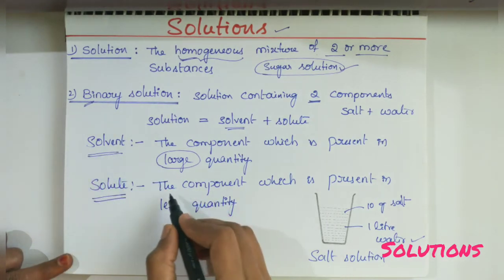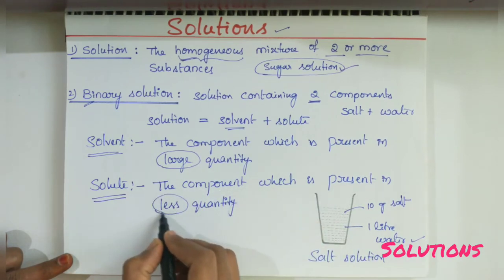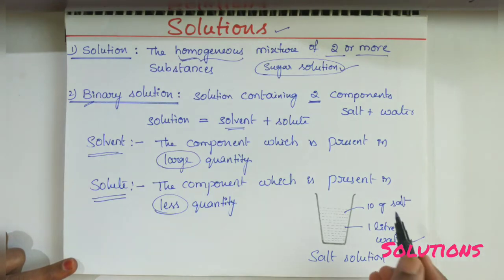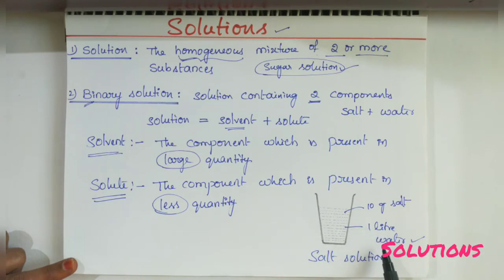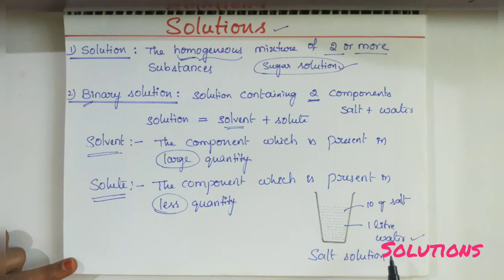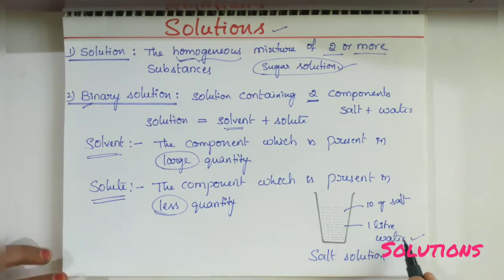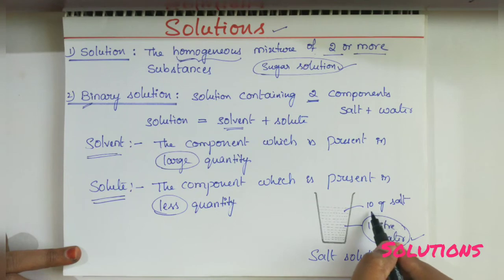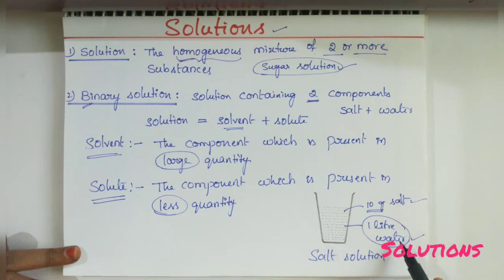Next, solute: the component which is present in less quantity is called solute. For example, take a sugar solution or salt solution. Here, one liter of water is present. To this one liter of water, 10 grams of salt is added and totally dissolved. The large quantity is water, so it is the solvent, and the less quantity — 10 grams of salt — is the solute. By mixing solute with solvent we get a solution.